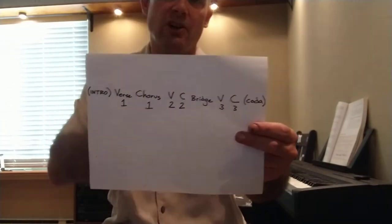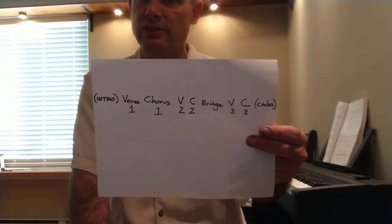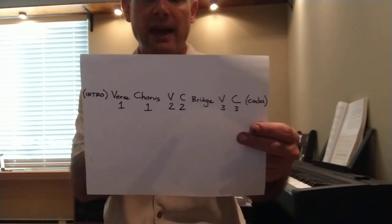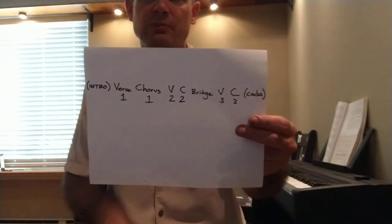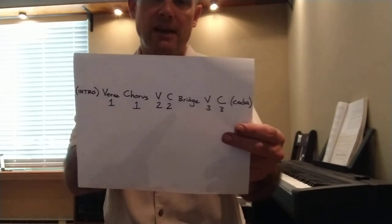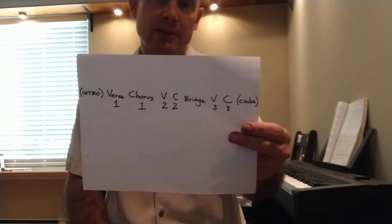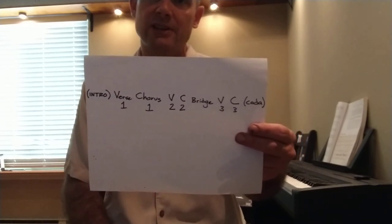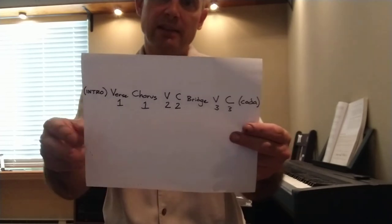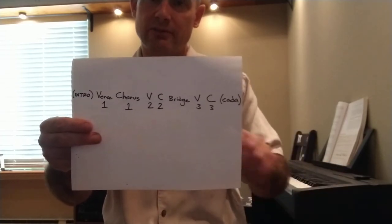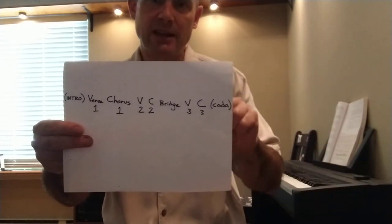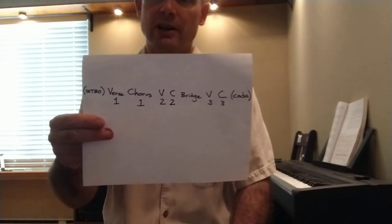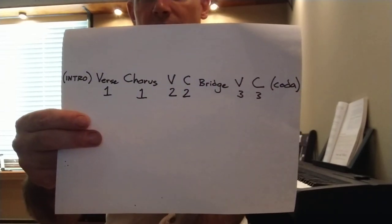So this is where usually we have something different, and that something different is usually called the bridge. The bridge could just be a different section, or in a rock song, maybe a guitar solo. We have to have something different at this spot so that it doesn't get too predictable. After that bridge, we normally have either another verse and another chorus, or sometimes we skip the third verse and go directly to the last chorus. And after that last chorus, we might have a concluding section — there might be a fade out — and that concluding section we call the coda.